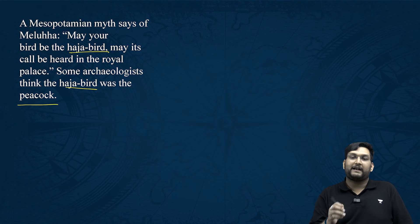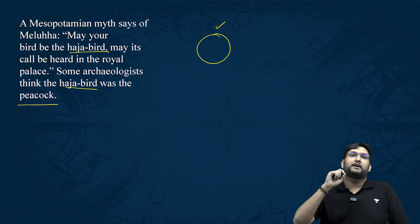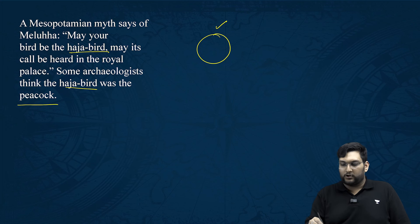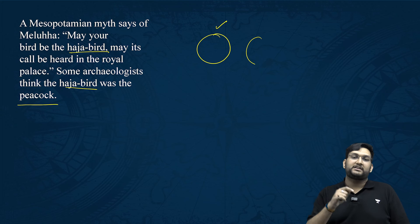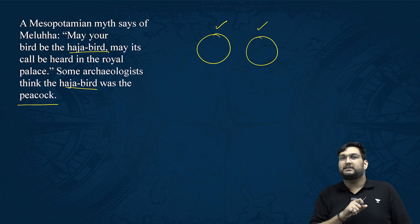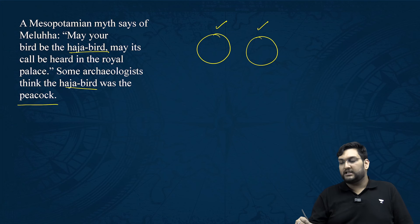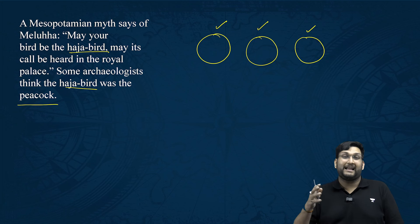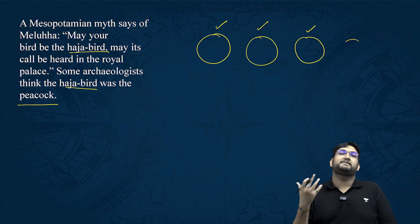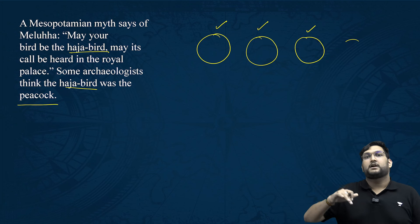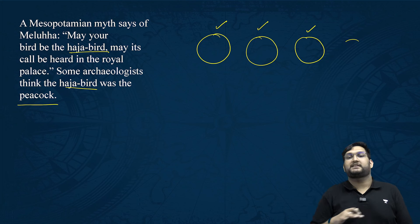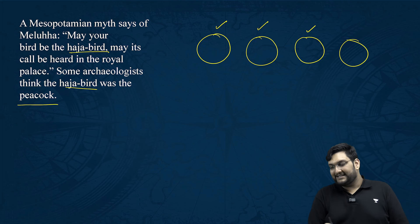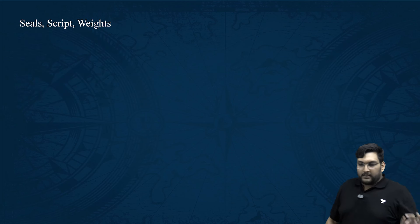To summarize what has been established so far: subsistence pattern is diverse with many grains and food types; social differentiation is evidenced through burials; urban planning is exemplified by Mohenjo-daro with its upper and lower town; and IVC's internal and external trade extended not just within the Indian subcontinent but across the Central Asian and West Asian sectors.